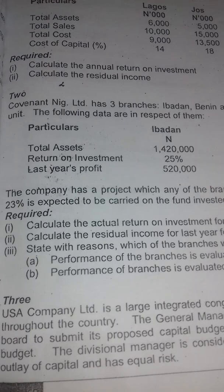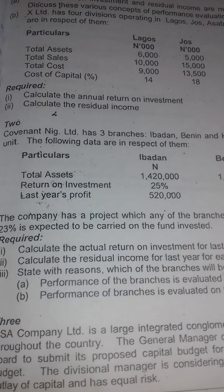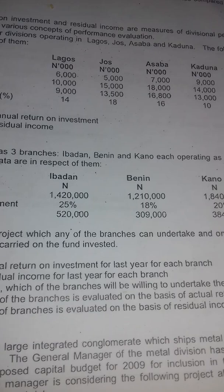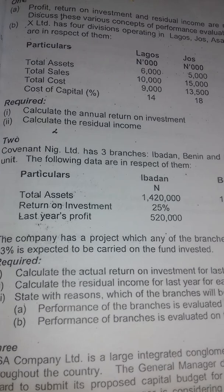The question is on Covenant Nigeria Limited. The company has three branches — Ibadan, Benin, and Kano — each operating as an independent branch or unit. The following data are in respect of them.